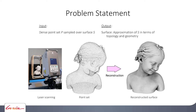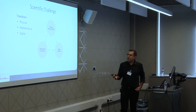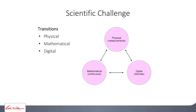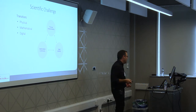Under which conditions can we recover the correct geometry and topology? This is a scientific challenge because it is at the core of transitions between physical representations accessed through measurements, mathematical representations such as a 2-manifold, and discrete digital representations as a point set in a computer. It is really about going from measurements to mathematics and to discrete digital form.